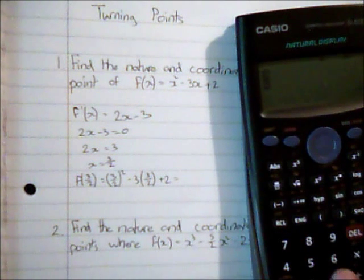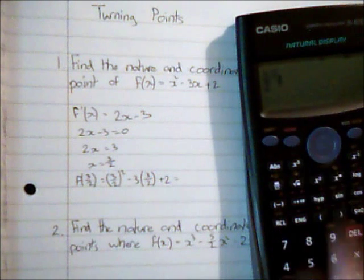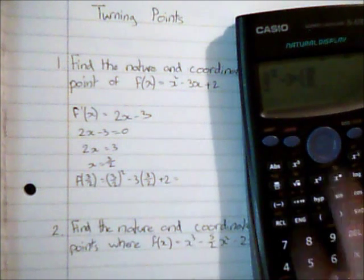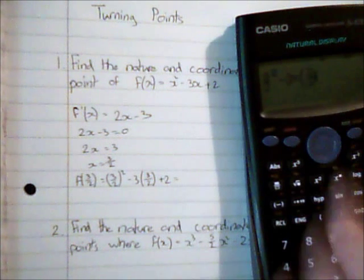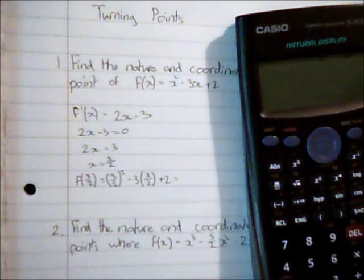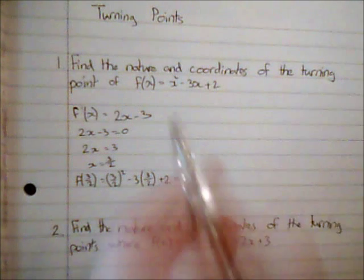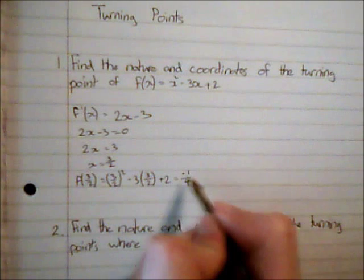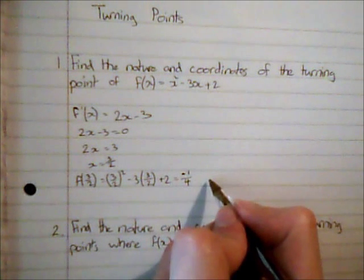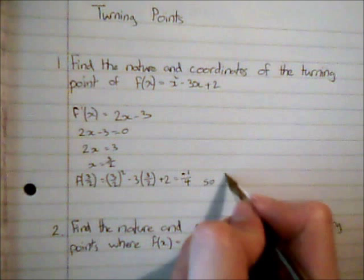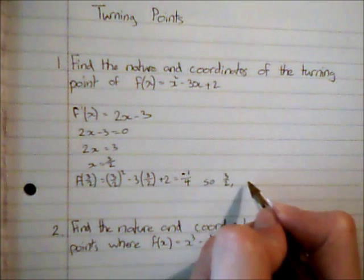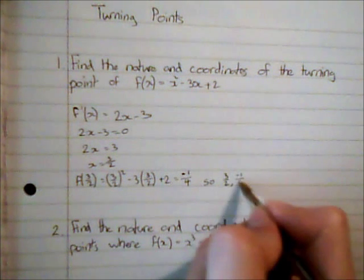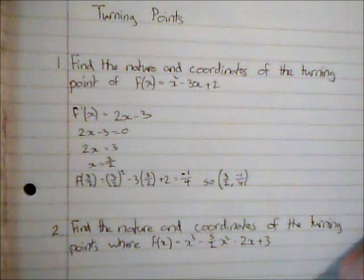I'm going to evaluate that on my calculator, and that gives me negative a quarter. So the coordinates of the turning point: the x-coordinate was 3 over 2 and the y-coordinate was negative a quarter.